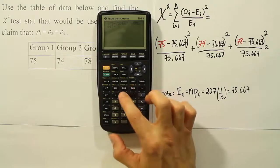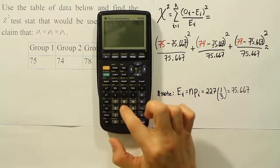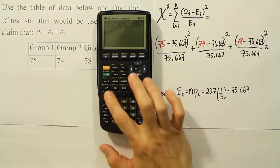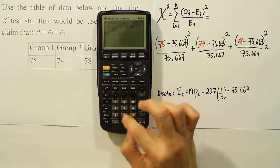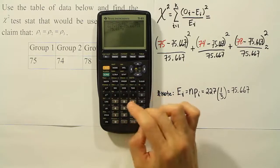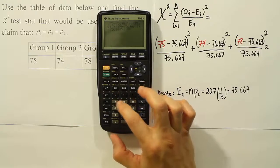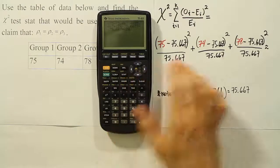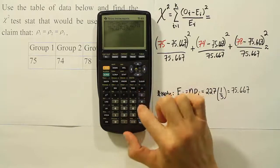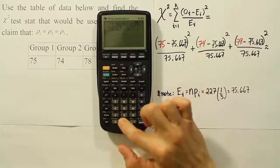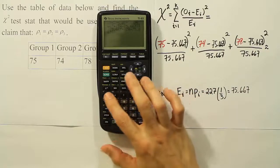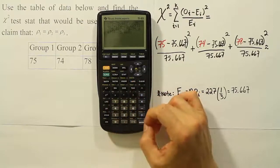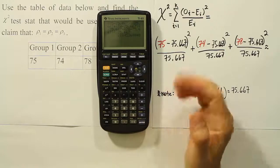And then plus, open parenthesis, 74 minus 75.667, close parenthesis, squared, divided by 75.667. Plus open parenthesis, 78 minus 75.667. Then close up the parenthesis, square it, and divide by 75.667. Now once it's all in, I go ahead and hit enter, and there's my answer.